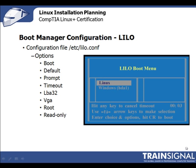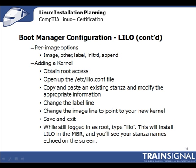Timeout sets the time in tenths of seconds that Lilo waits before booting the default kernel. LBA32, or large disk support, enables Lilo to boot with disks where the partition is larger than 1024 cylinders. VGA sets the VGA text mode to use while booting. ROOT sets the root partition, and READ ONLY says to mount the filesystem in read-only mode. The next section, the per-image section, is for Linux kernels or other operating systems and uses stanzas. IMAGE designates which Linux kernel file to use, OTHER indicates a partition with its own bootloader, LABEL provides a name, and INITRD points to an initial RAM disk. Append passes other options like memory settings to Lilo.